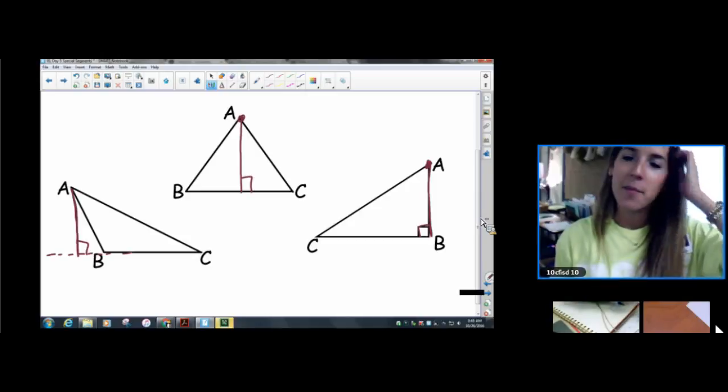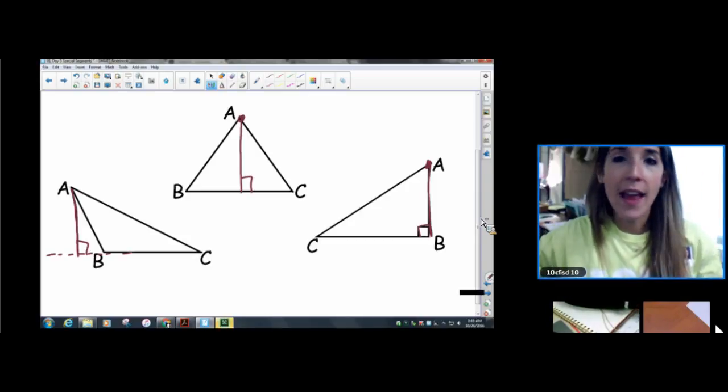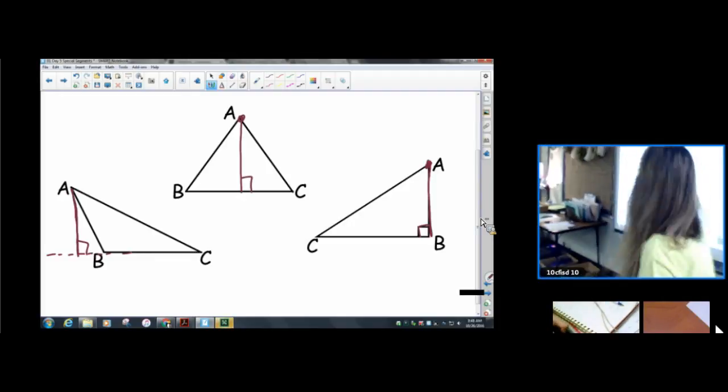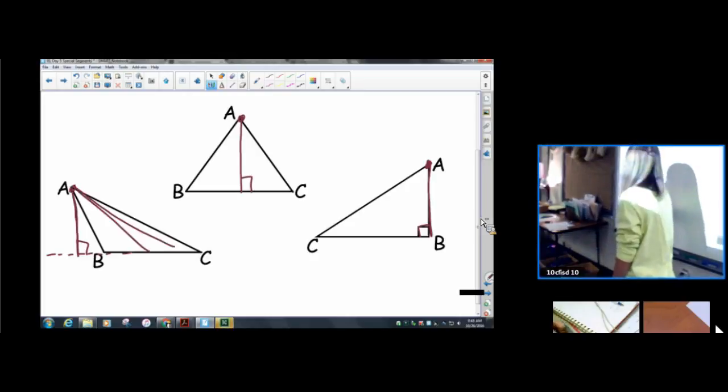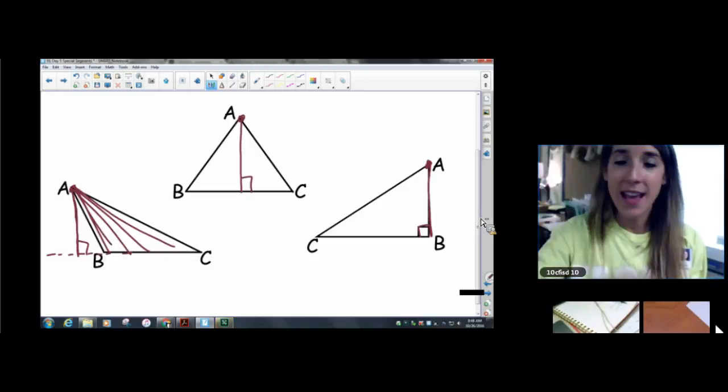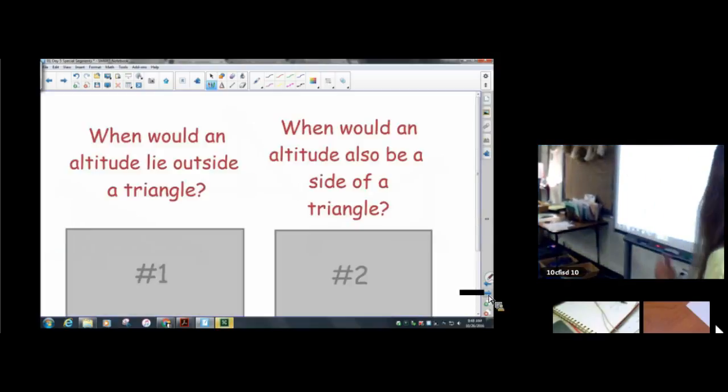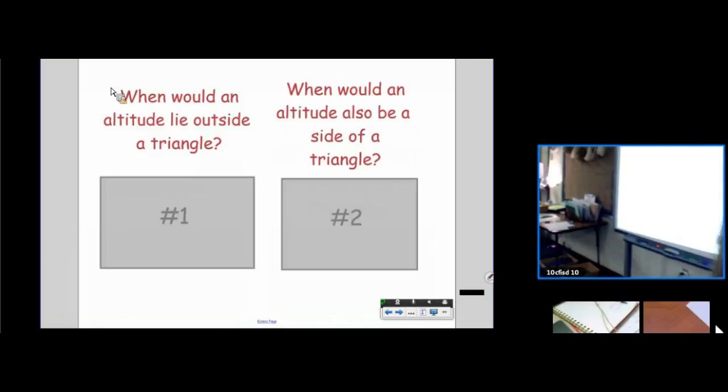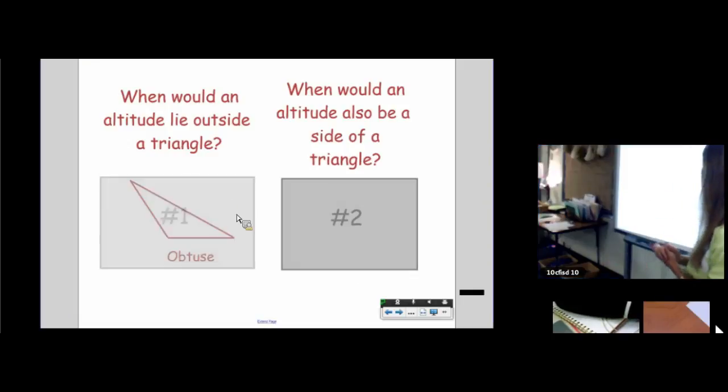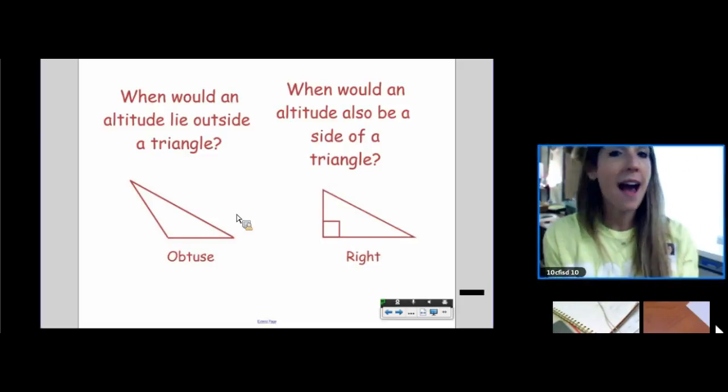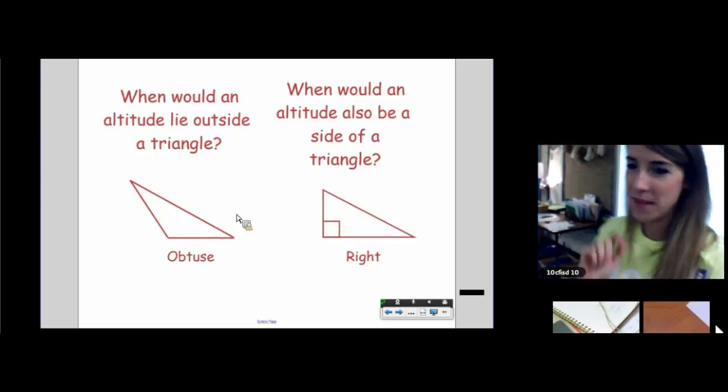That's just the one from angle A. If you had drawn it from angle B on that obtuse triangle, it would fall inside. So it's not the case the whole time. But you need to be perpendicular to the opposite side. There's no way to start here and be perpendicular. So you had to resort to the altitude falling outside the triangle, which is totally allowed. When would an altitude lie outside the triangle and when would an altitude also be the side of a triangle? So that's what we just talked about, right? When it is obtuse and when it is right. Not all three altitudes will lie outside or on, but there will be some that do.